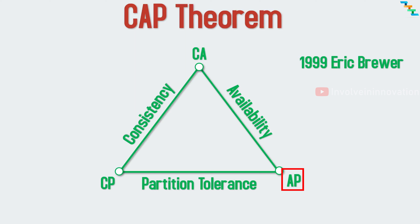The AP system delivers availability and partition tolerance at the expense of consistency. In the presence of data shared across multiple nodes, all the nodes remain available, but nodes which are out-of-sync might return an older version of data than other nodes. When the partition is resolved, the system typically re-syncs the nodes to repair all inconsistencies in the system.